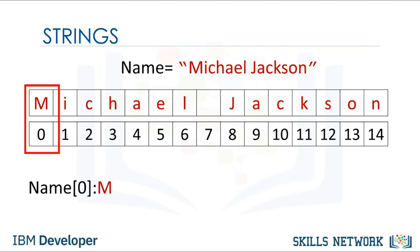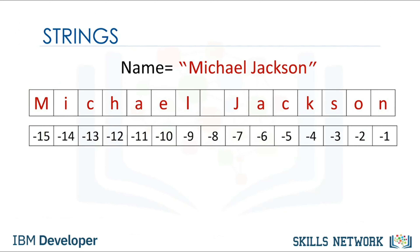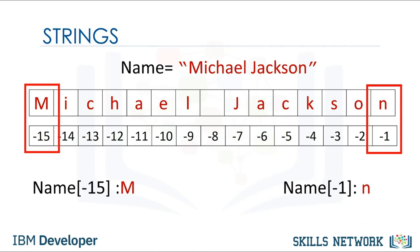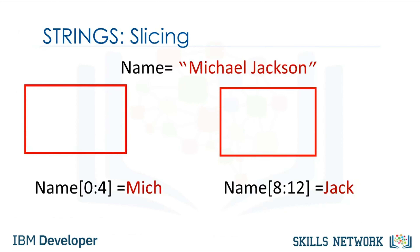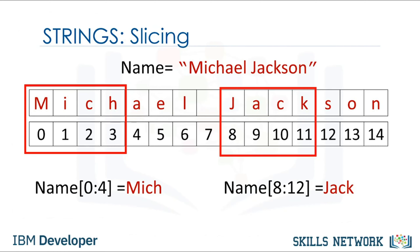The first index can be accessed as follows. We can access index 6 or the 13th index. We can also use negative indexing with strings. The last element is given by the index negative 1. The first element can be obtained by index negative 15, and so on. We can bind a string to another variable.